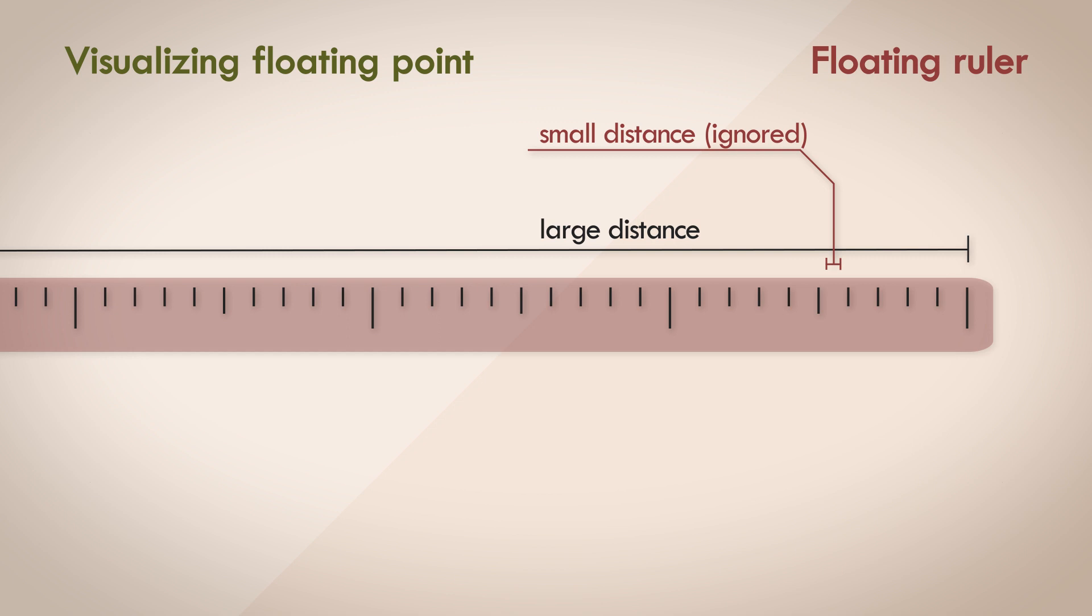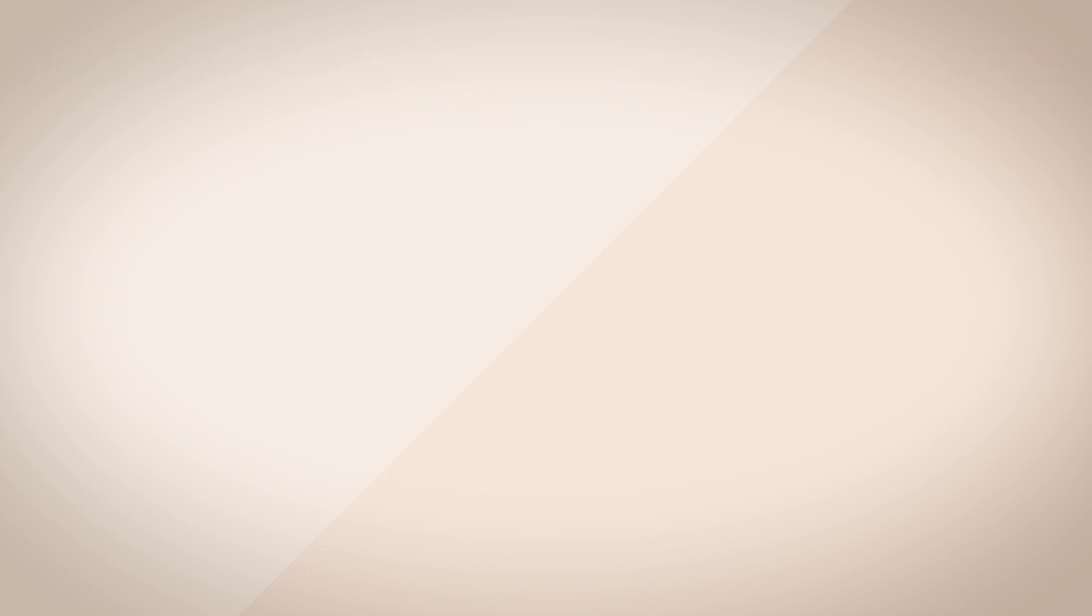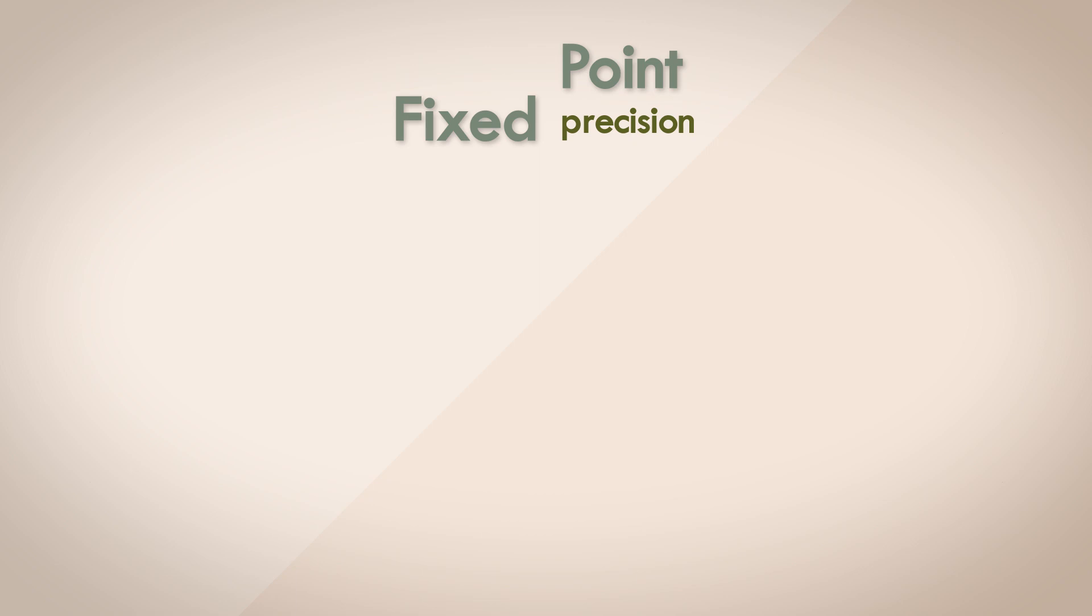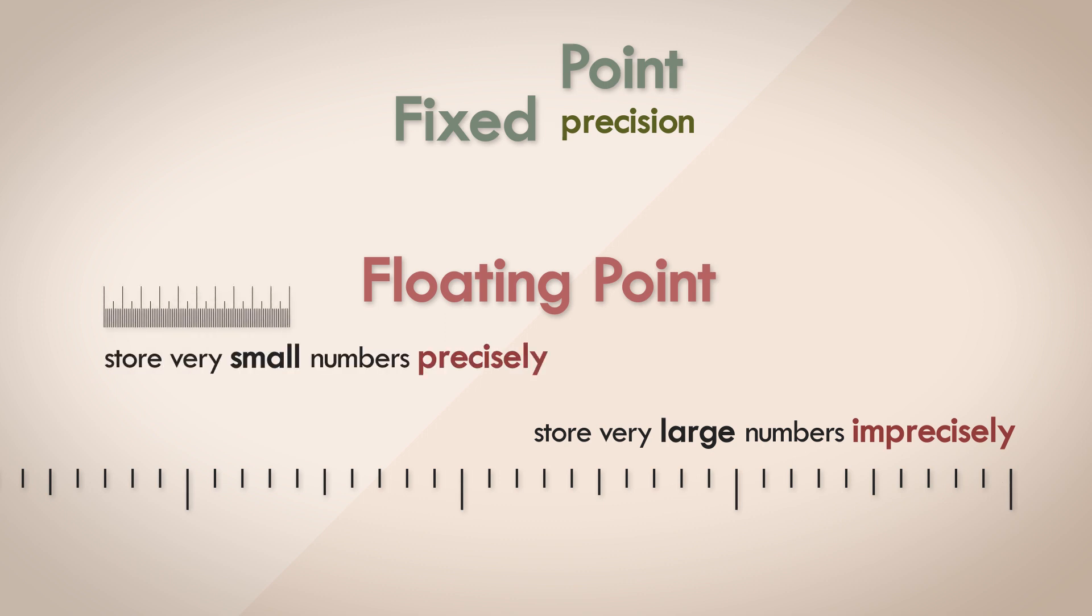We'll explore these limitations with real world examples soon enough. But before that, let's just summarize what we know. Fixed point numbers give us fixed, predictable precision. With floating point numbers, you can store either very large numbers imprecisely or very small numbers precisely. If you remember this fact, then a lot of things become really apparent very soon. See you in the next one.